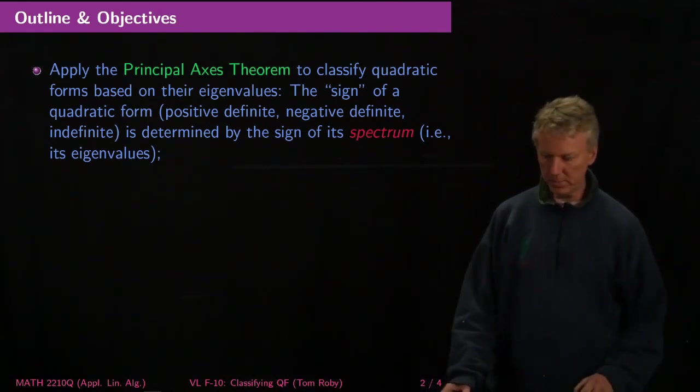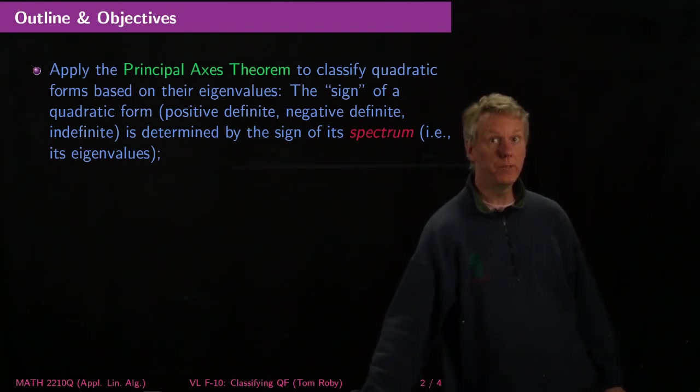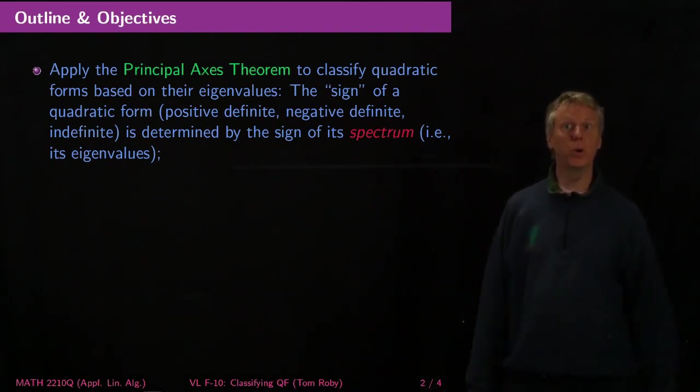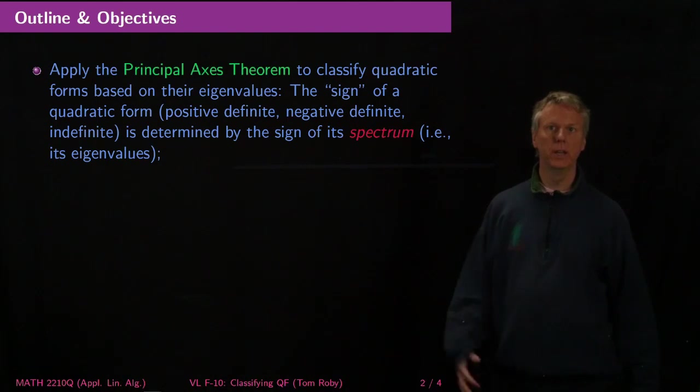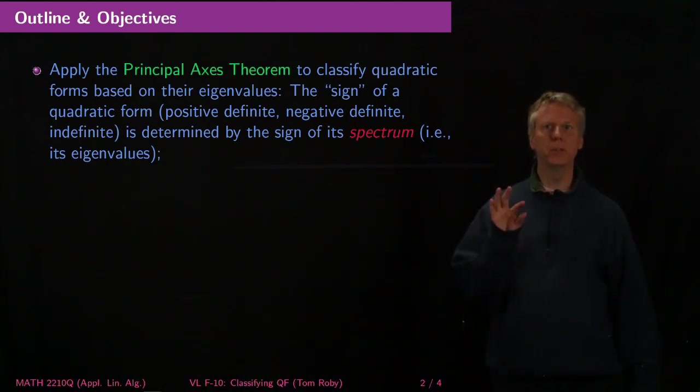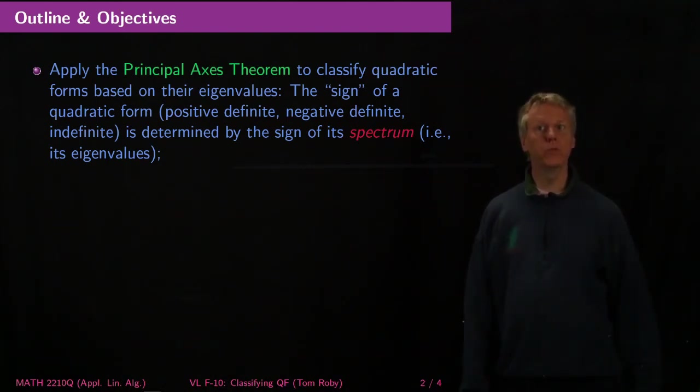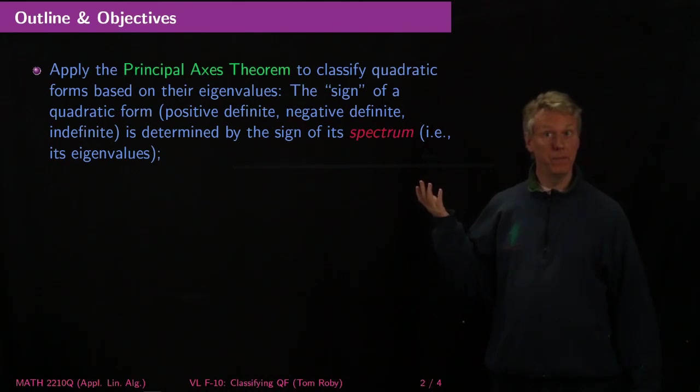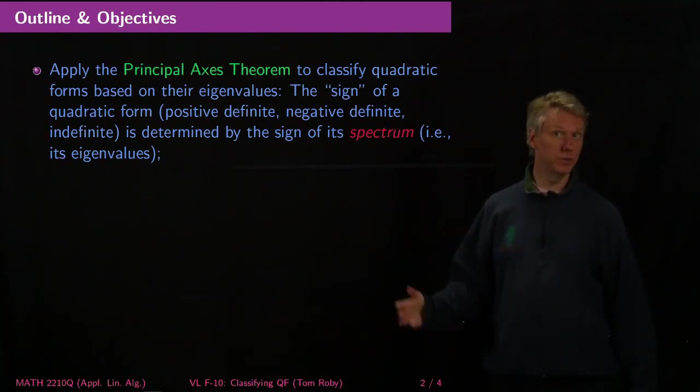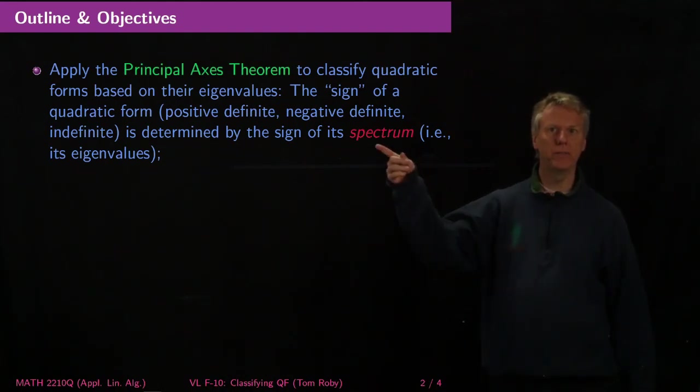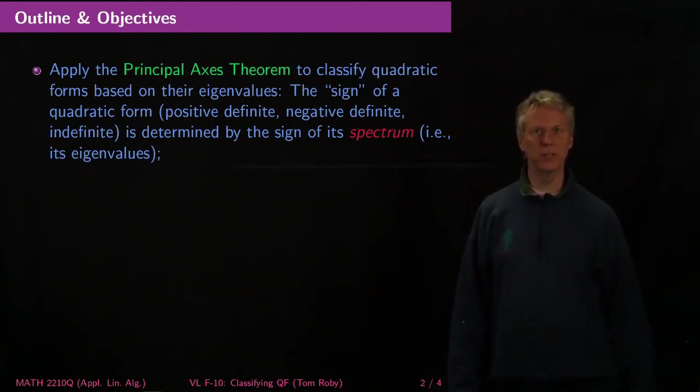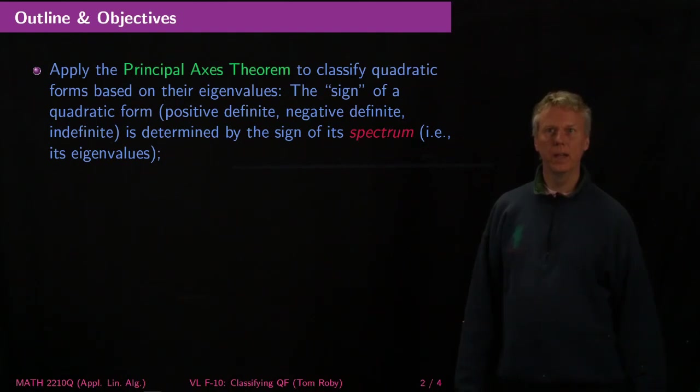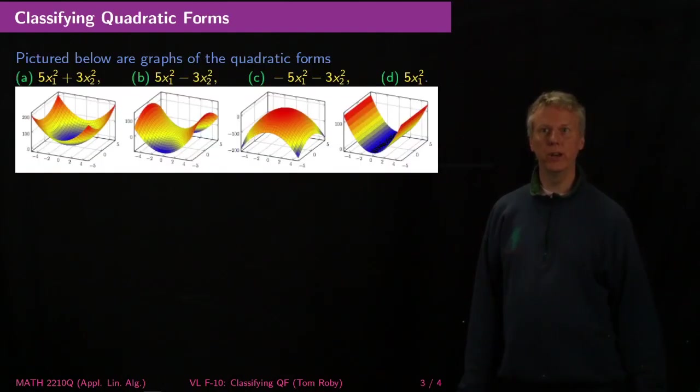We want to apply the principal axis theorem that we saw in a recent video lecture to classify quadratic forms based on their eigenvalues. It turns out that the sign of a quadratic form, whether it's positive definite, negative definite, indefinite, or a couple of other cases, is determined by the sign of its eigenvalues. A set or multi-set of eigenvalues is sometimes called the spectrum.